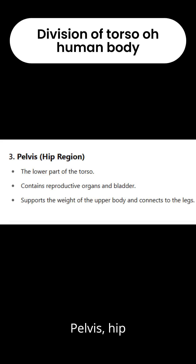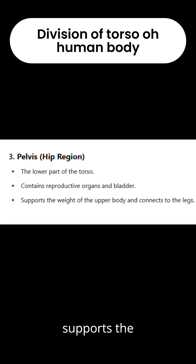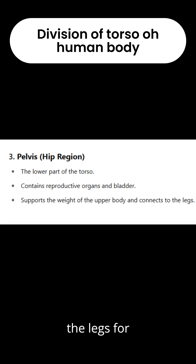3. Pelvis (hip region). The lower part of the torso contains reproductive organs and bladder, and supports the weight of the upper body and connects to the legs.